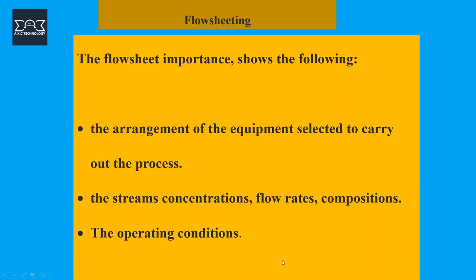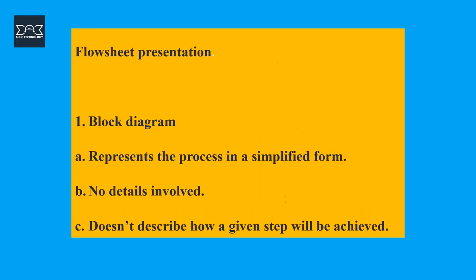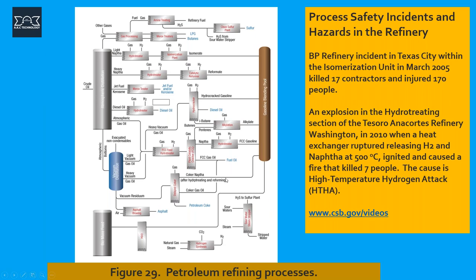Flowsheets represent the arrangement in terms of flow, compositions, and operating conditions. A flow diagram represents a simplified form — the block diagram — showing only what's going in and coming out. There is a typical block diagram of a refinery unit with the crude going through the various aspects such as the crude distillation unit. We have the vacuum unit, whereby the bottom product from the crude distillation goes through to the vacuum unit — there's no cracking in this unit, you're only reducing the pressure to get more products out.